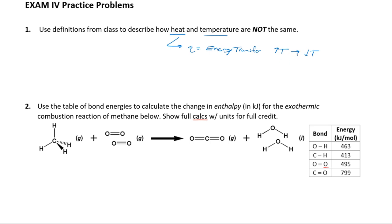If you have high-speed molecules with lots of energy and some low-speed molecules, that energy transfers until the fast ones slow down and the slow ones speed up — that's heat. Temperature has a very specific definition in thermodynamics: it is a measure of the average translational kinetic energy. That relates back to kinetic molecular theory and gases, where kinetic energy is one-half mv-squared, connecting temperature to molecular speed.